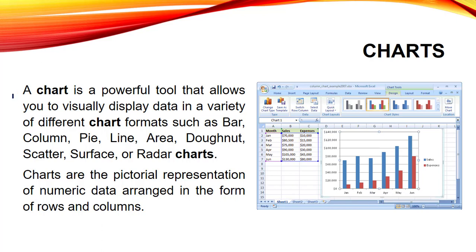A chart is a powerful tool that allows you to visually display data in a variety of different chart formats such as bar, column, pie, line, area, donut, scatter, surface or radar charts. Charts are the pictorial representation of numeric data arranged in the form of rows and columns.